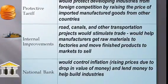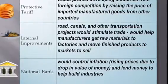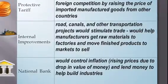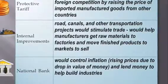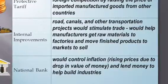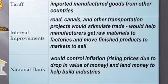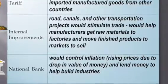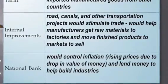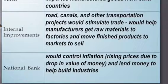Clay's American System sought to unify a sectionally divided country. The plan consisted of three parts. First, a protective tariff to help developing industries. Second, internal improvements like roads, canals, and other ways to transport goods and materials. Finally, a national bank that would protect the economy by controlling inflation.